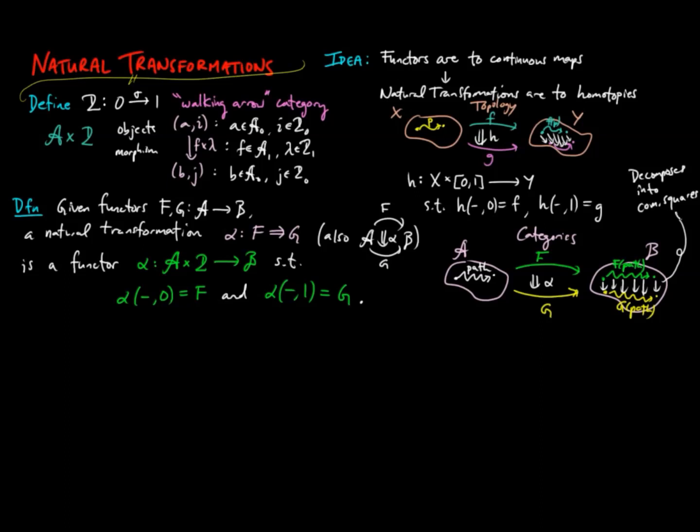In fact, showing each one path is transformed by alpha in a commuting way is enough to show that alpha assembles into a natural transformation as we gave in the definition. This leads us to an equivalence between our definition of a natural transformation and the more typical way it is defined in almost every textbook. Namely, the following are equivalent.